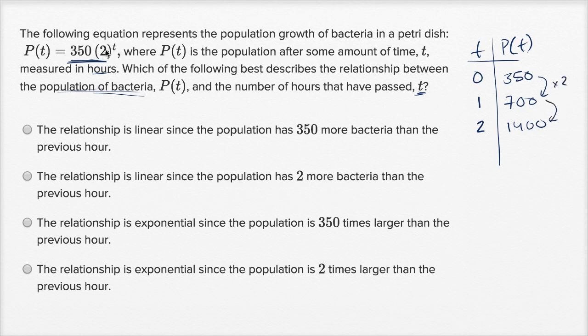Because for every hour, you're going to take 2 to that power as you increment, then multiply that times 350. So every hour, your population is going to double. After three hours, your population is going to be 2800. So this is definitely not a linear relationship. You definitely have much more than just 350 more bacteria than the previous hour.